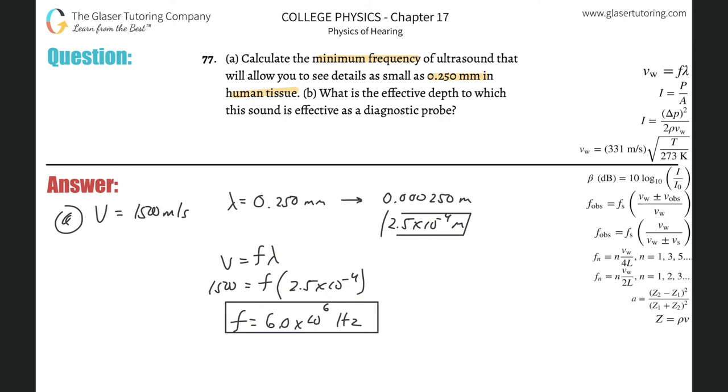And then letter b. What is b asking? It says what is the effective depth to which this sound is effective. The general rule of thumb is that you can take the wavelength and multiply by 500. That's basically the max depth.